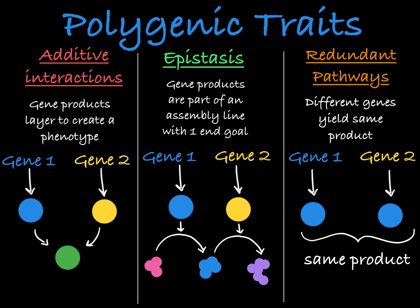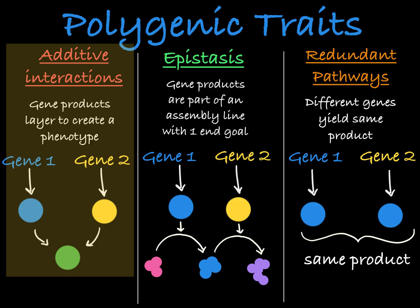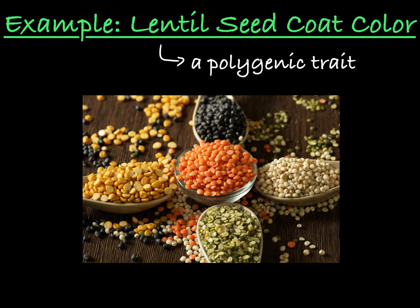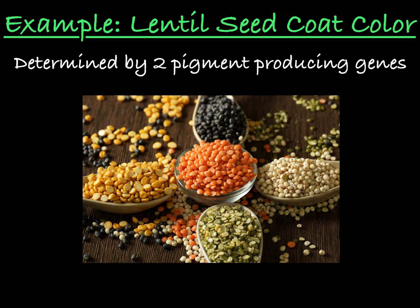Let's look at a concrete example of a polygenic trait that results from an additive interaction between genes: lentil seed color, which is a trait determined by two different genes involved in making pigment.